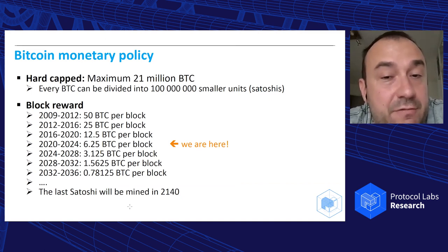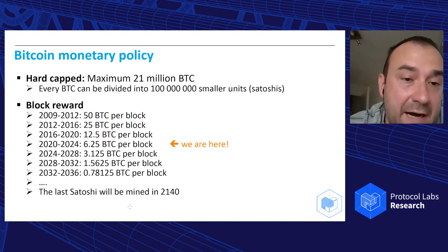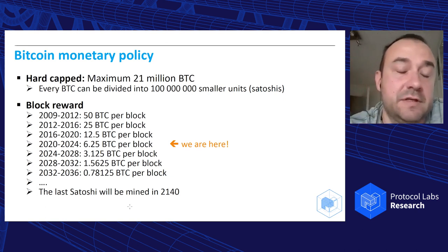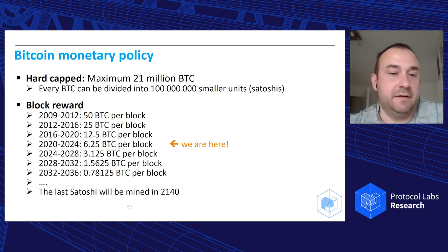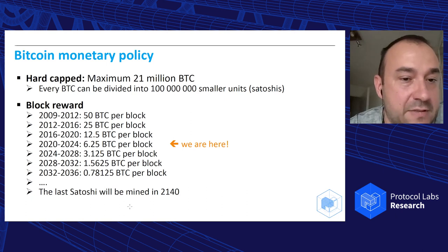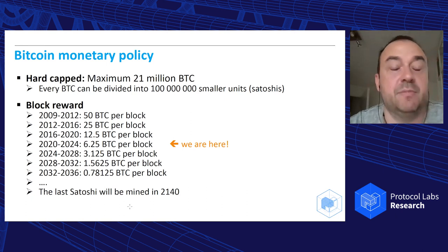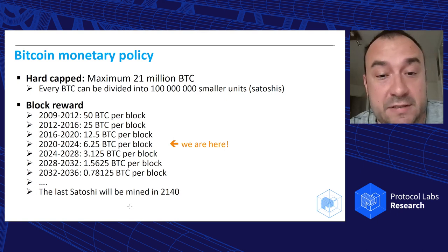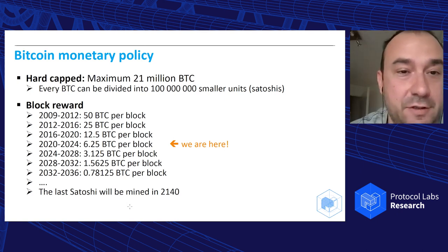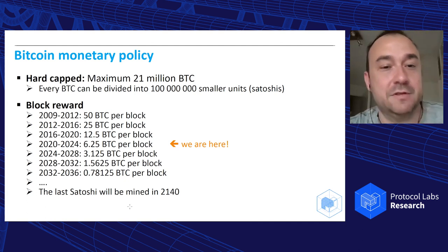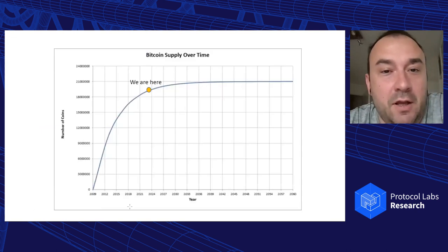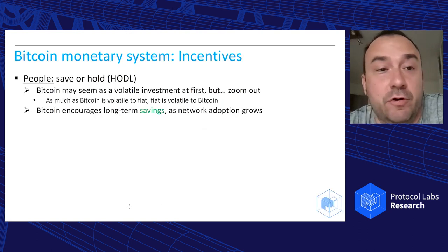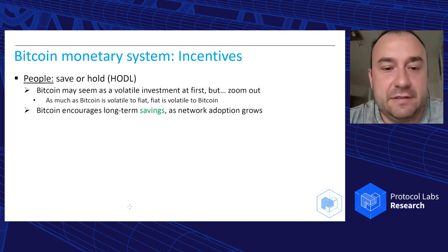50% of all Bitcoin were mined in the first four years, then another 25% until 2016, then another 12.5% and so on. The block reward will be less than one Bitcoin in 2032, and the last Satoshi will be mined in 2140. We are currently at roughly 90% of printed Bitcoins — there will be no more. So what are the incentives? In the current system the incentive is to spend. What are the incentives in Bitcoin?